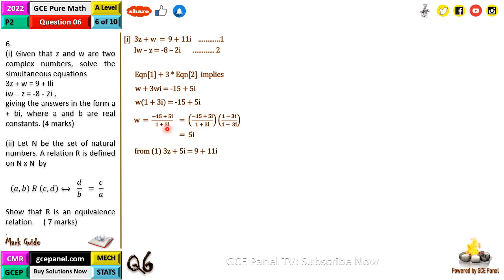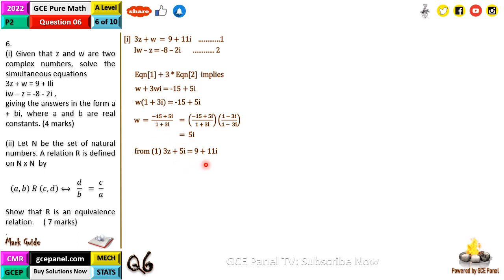So our w equals 5i after all the simplifications. Now substituting back into equation one, we have 3z plus 5i equals 9 plus 11i, and from here our z equals 3 plus 2i.